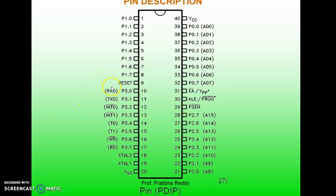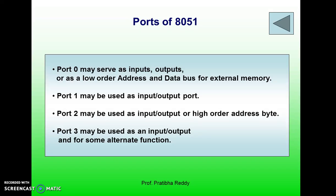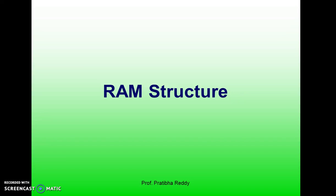Port 3 handles many functions. Port 0 contains the multiplexed lower byte of the address bus and data bus, AD0 to AD7, since the address bus is 16-bit and the data bus is 8-bit. Port 2 contains the higher byte of the address bus, A8 to A15. This is the detailed architecture of how it works, along with the pin functions and alternate functions of Port 3.